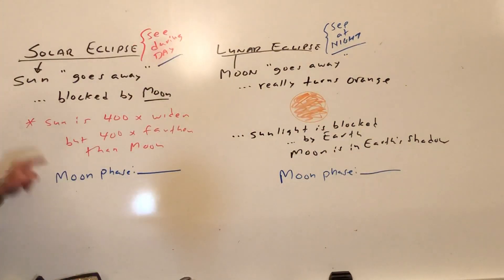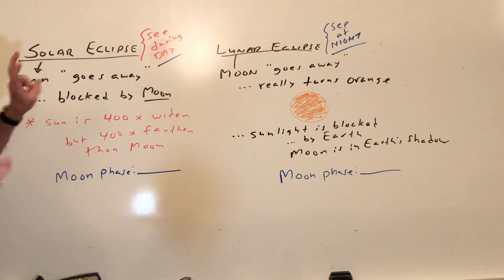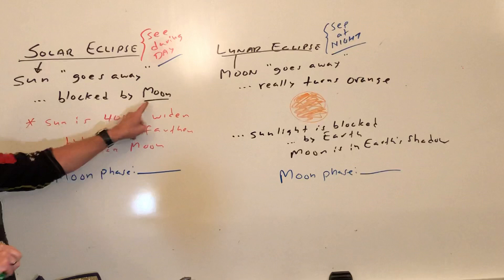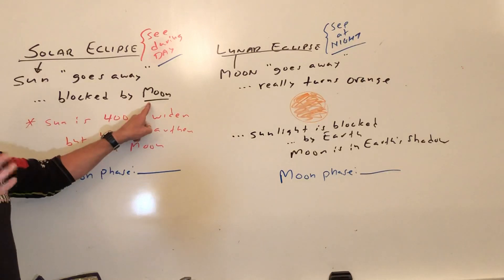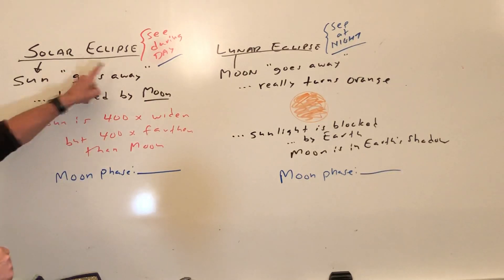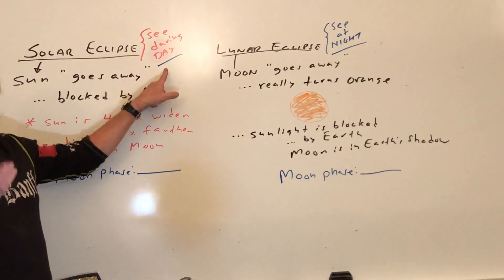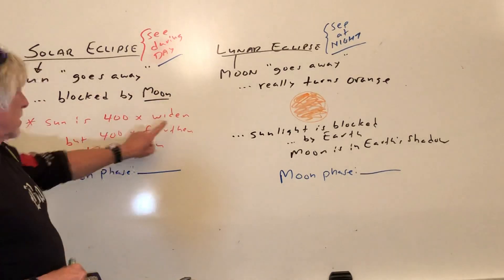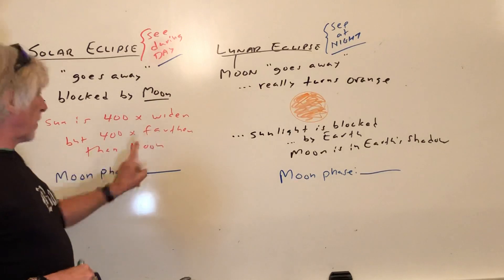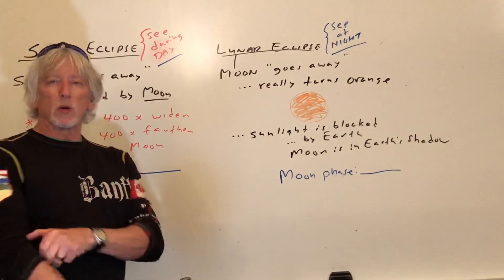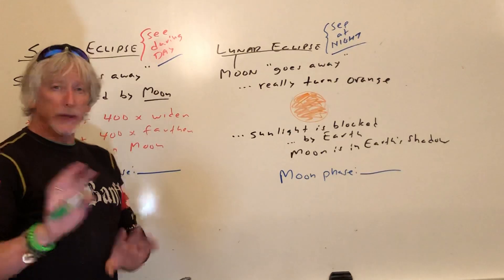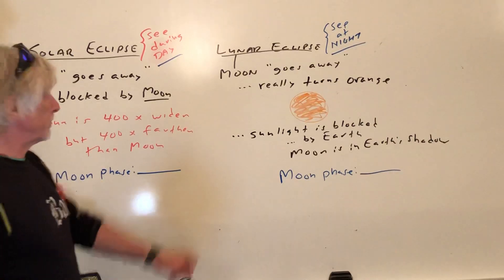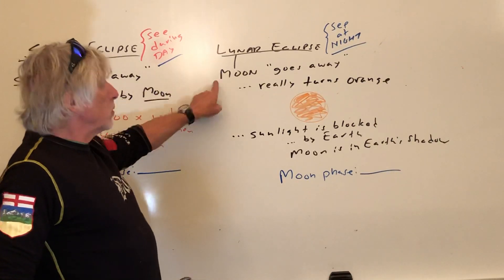A solar eclipse is when the sun goes away — really, the sun is blocked by the moon. We see this during the day, obviously, since the sun is out. The sun is 400 times wider but also 400 times farther away than the moon. That's something to remember and we're going to build on that — though people in the past didn't know that.